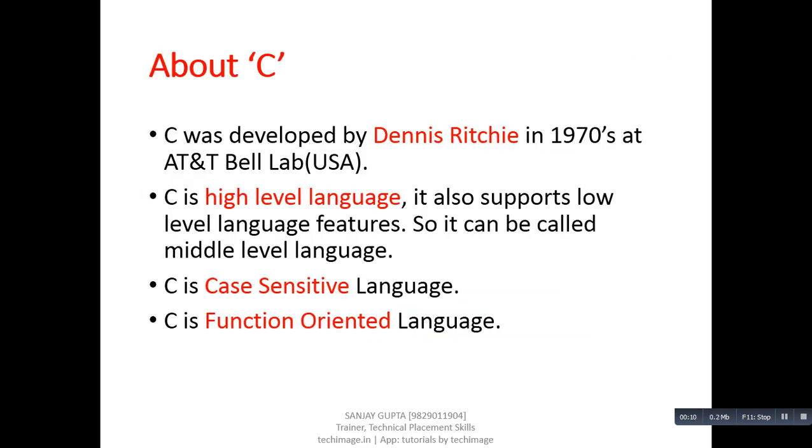First is about C. C was developed by Dennis Ritchie who was a mathematician. He developed C in 1970s at AT&T Bell lab. This lab is established in USA.